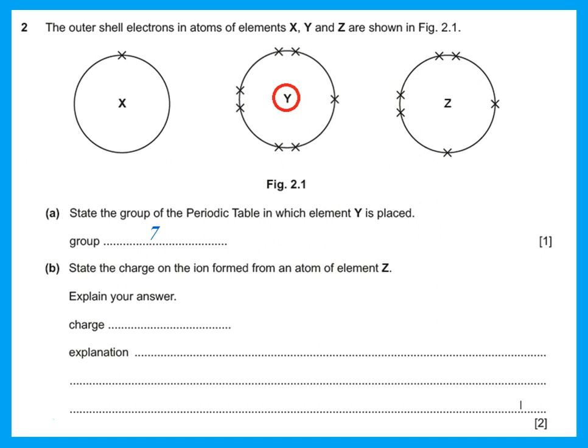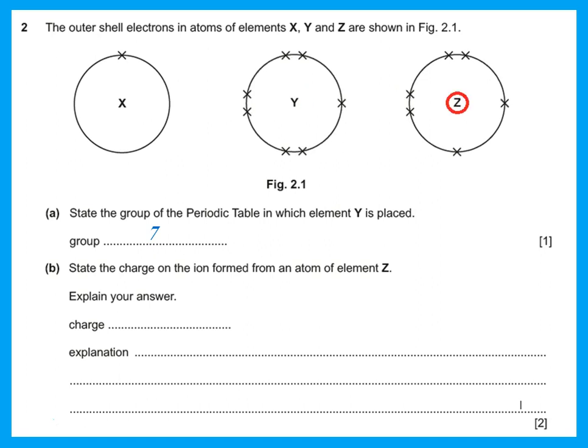State the charge on the ion formed from an atom of element Z. That is determined by the number of electrons in the outer shell. Element Z has 6 electrons in its outer shell, meaning it needs to gain 2 electrons to have a complete outer shell. Therefore the charge on the ion will be minus 2.